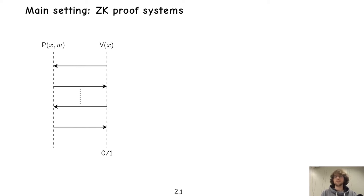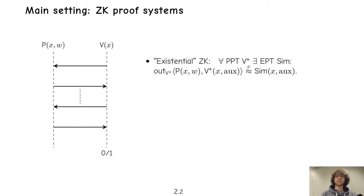Zero-knowledge says that the verifier cannot learn anything from this interaction. It's usually formulated as existential zero-knowledge, which says that for every verifier there exists a simulator such that the output of the real protocol and the output of the simulator are indistinguishable, and the simulator does not get the witness input.